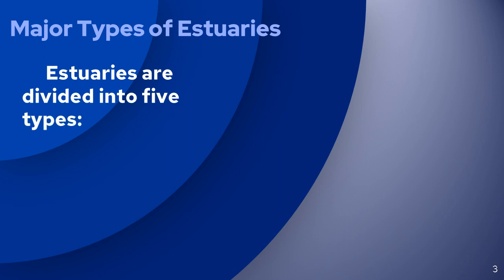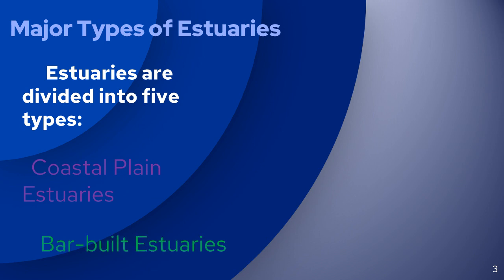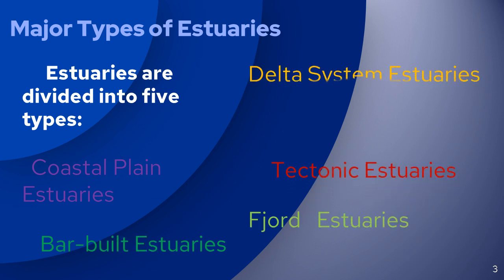Estuaries are divided into five major types depending on how they are formed. The classification is based on geological features: coastal plain estuaries, barbelt estuaries, tectonic estuaries, delta system estuaries, and fjord estuaries.